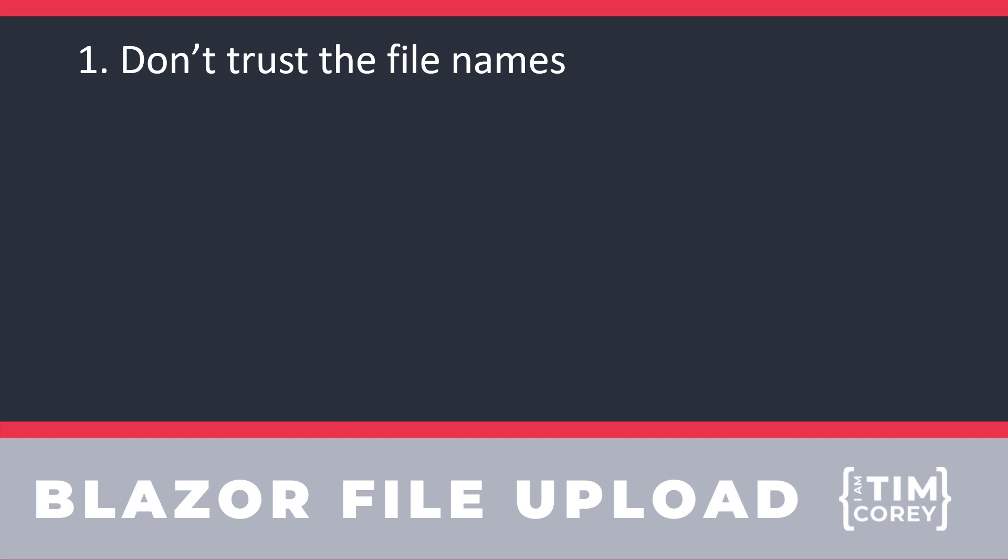You can go even further and validate that the extension is actually what that file type was. You probably should do that once you get into a larger environment. File names could be either accidentally or intentionally destructive to your environment, especially if you start displaying them on web pages. Imagine if a file name contained a link to an illicit site — if you just display that file on a website showing the file name, you'd be showing off that site. Always do an HTML scrub if you're going to display or use those file names.